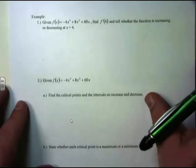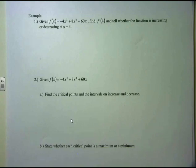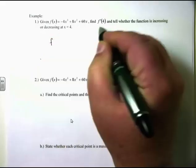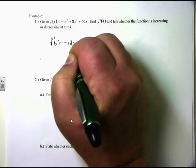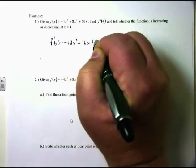Let's take a look at some examples. Given f(x) = -4x³ + 8x² + 60x, find f'(4) and tell whether the function is increasing or decreasing at x = 4. The first thing I want to do is find f'(x). The derivative is negative 12x² + 16x + 60.